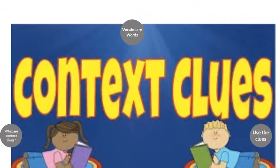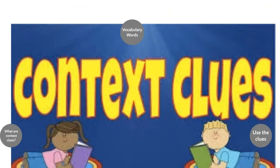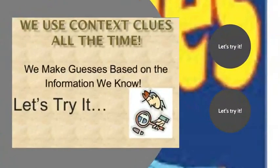The main context clues we are going to focus on today are synonyms, which are words that share the same meaning, antonyms, which are opposites, definitions of words, as well as explanation. Sometimes a word's explanation is provided within the sentence itself to help you understand it. But before we introduce the new vocabulary words, I want us to play a little game. I want you to work like a detective to make a guess based on the information you know in the text. I have two prepared paragraphs for you and I want you to guess what word I am referring to.